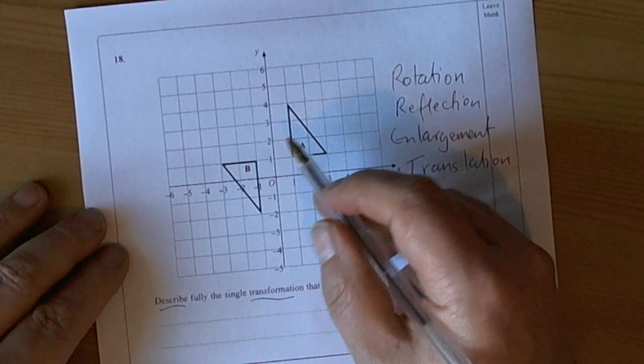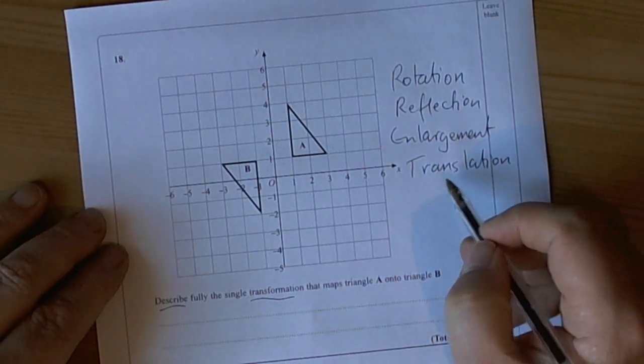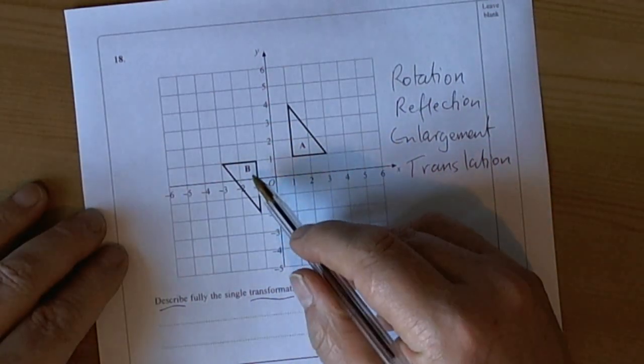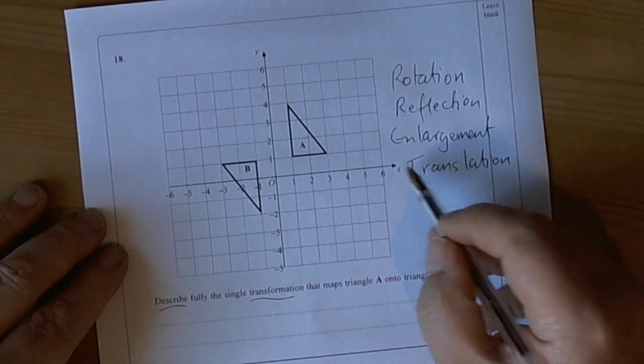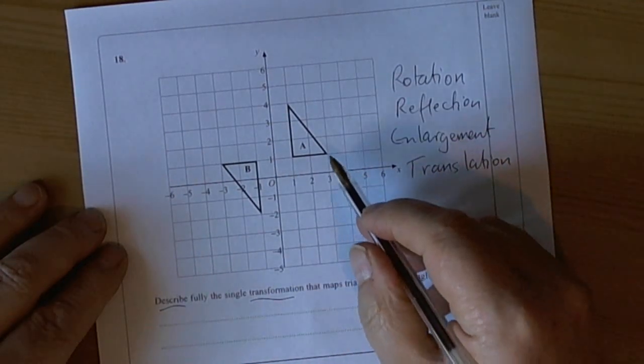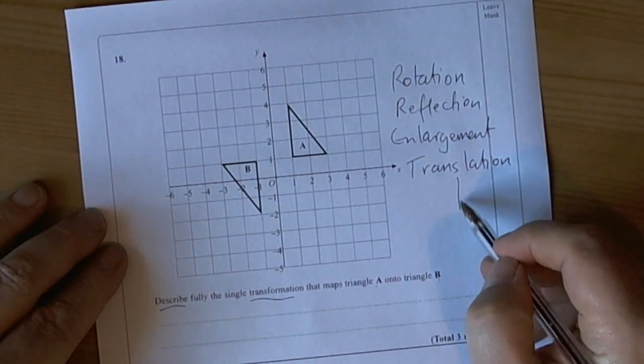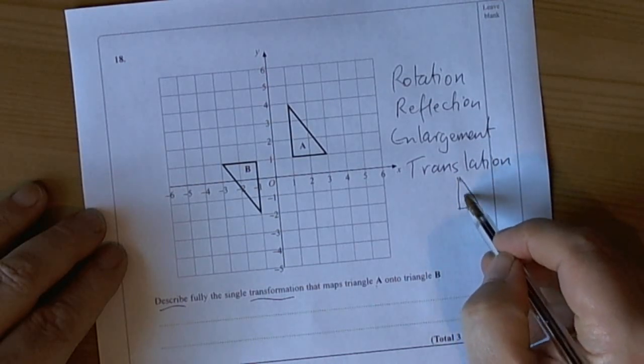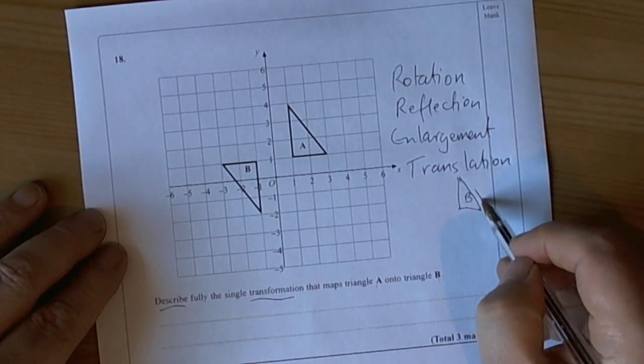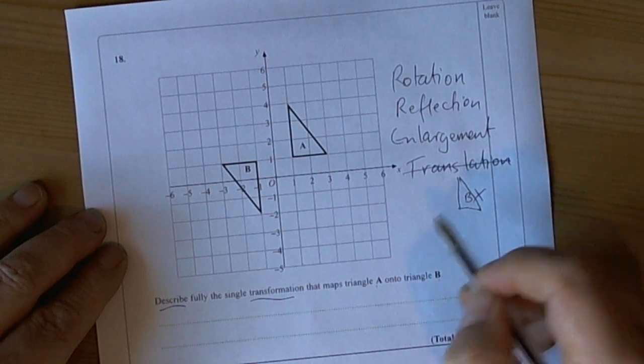So we look at this and we ask ourselves, is it a translation? Well no, because if we're going from A onto triangle B, then if it was a translation, B would look like that somewhere on the grid. It doesn't, so it can't be a translation.